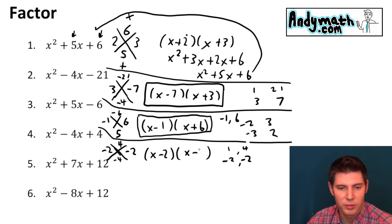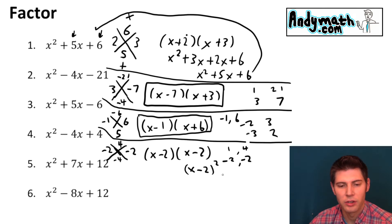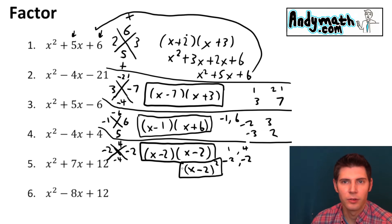x minus 2 times x minus 2. And you can also write this one as x minus 2 squared. Because there's two of them. So here's the two possible answers for that one.